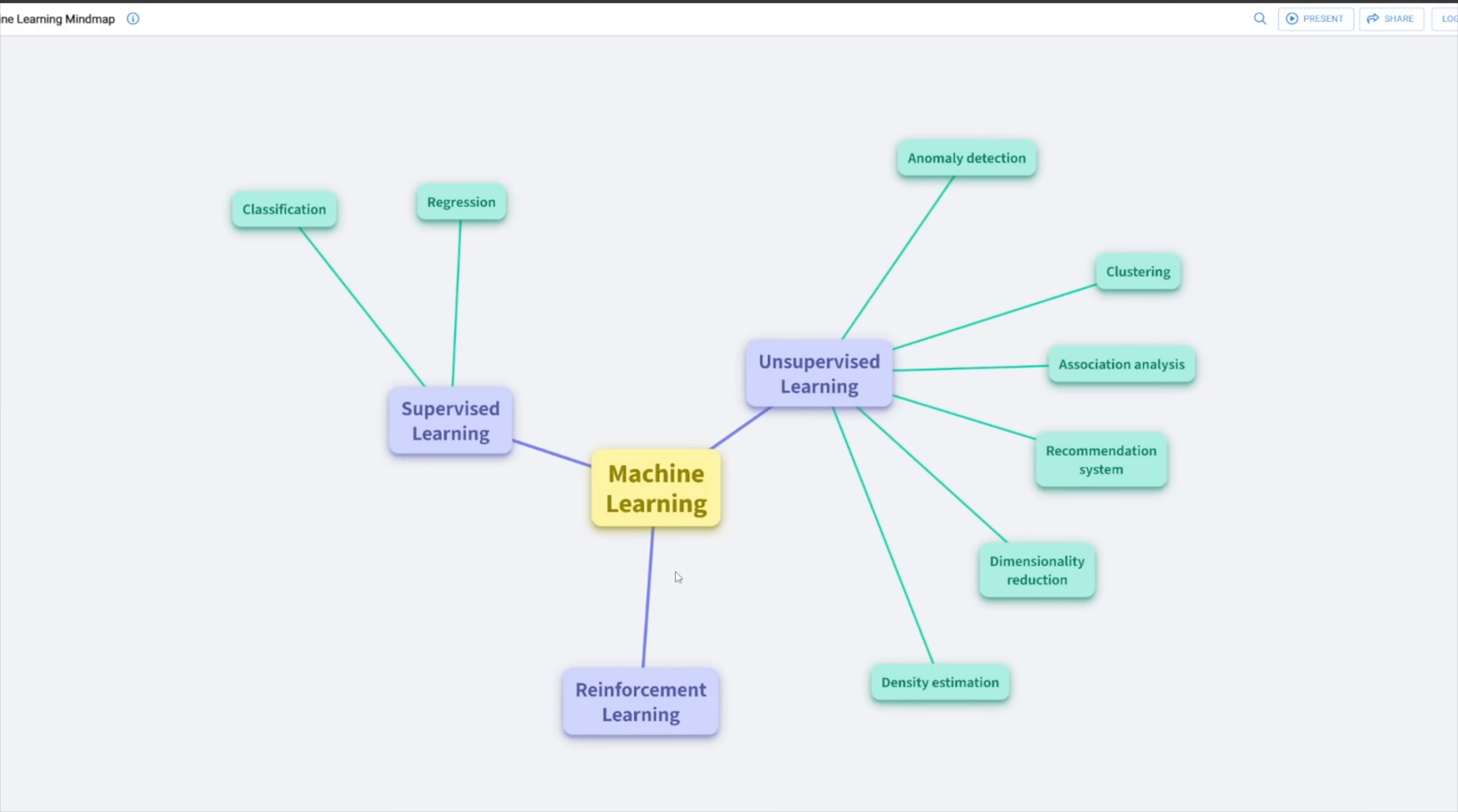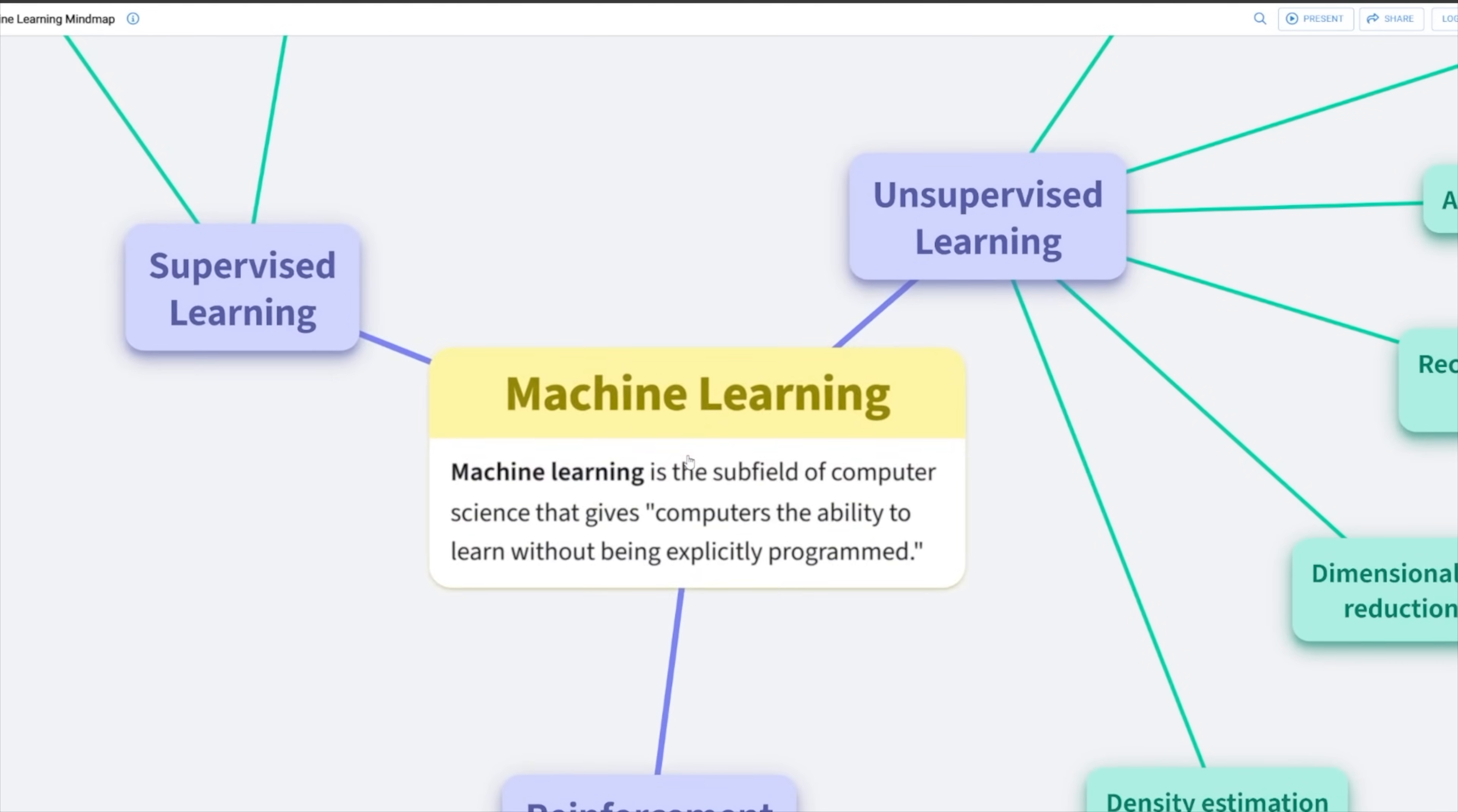For example, this is a Python learning mind map that I created to help people understand the different concepts in Python and how they're related to one another. Similarly, this is another mind map about the main subfields of machine learning. Many of you asked me which tool I use to create these mind maps. I'll talk about the tools I use later in this video.